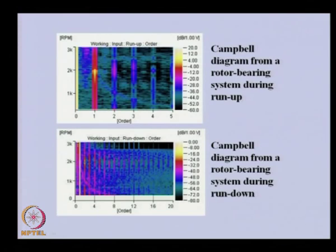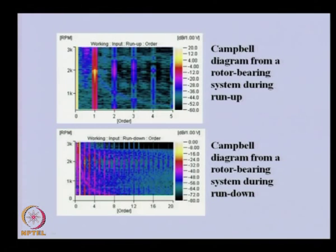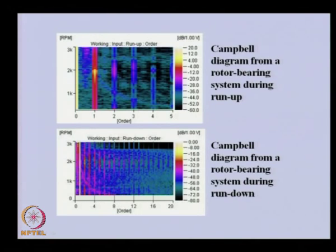A typical experimental plot shows the run-up and run-down of the rotor. At the first critical speed there are large oscillations, and some sub-critical phenomena are also observed in the first plot. The run-down plot shows more unstable regions.